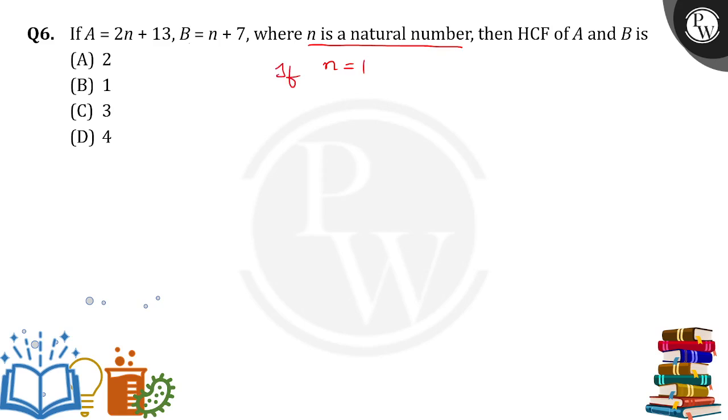So if n is equal to 1, A value will be 2 times 1 plus 13, which is 15. Then B is equal to 1 plus 7, that is equal to 8.